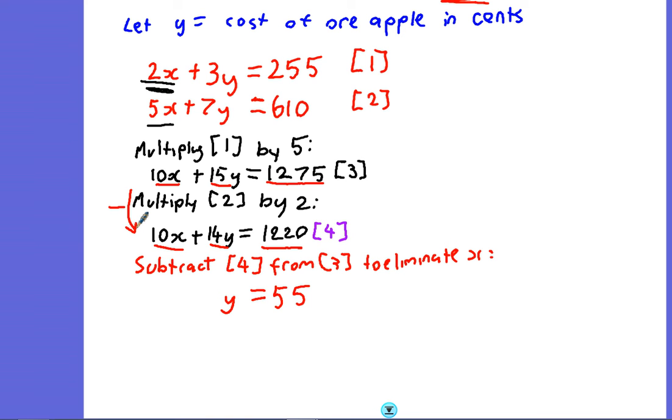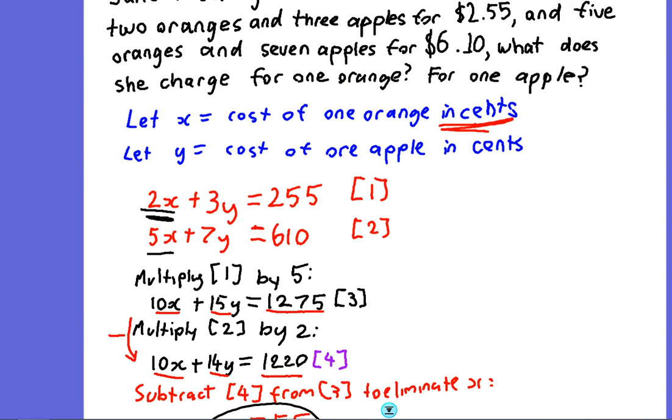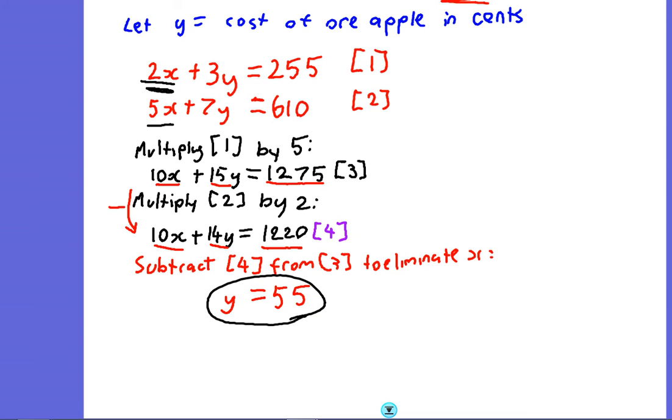So this is an important point in our process. We've got what we think is the right answer for y, which is of course the cost of one apple in cents. So we believe Jane's charging 55 cents for one apple. But we've still got a bit of work to do to keep on going, just to make sure we've got the right answer and to complete the other half of the answer.